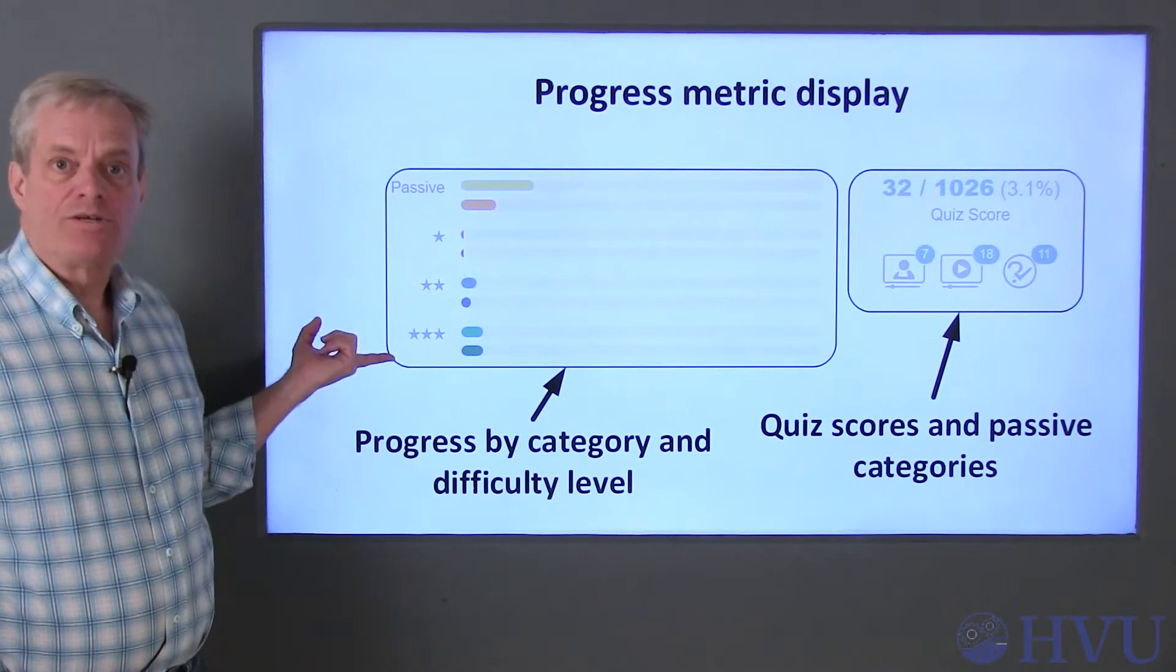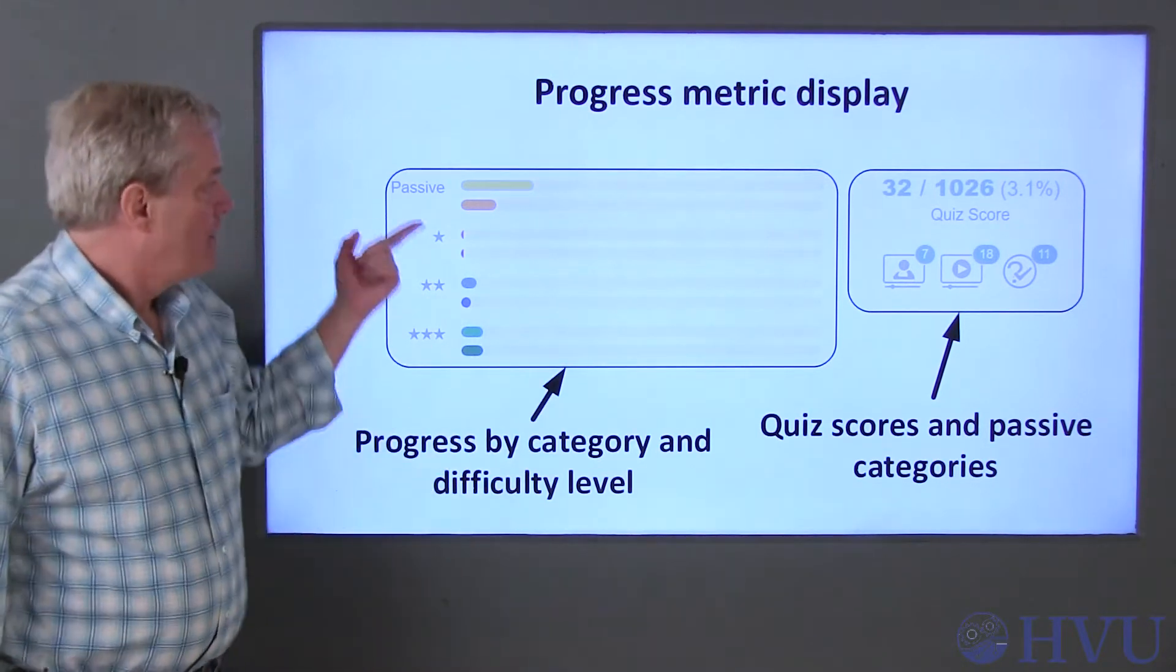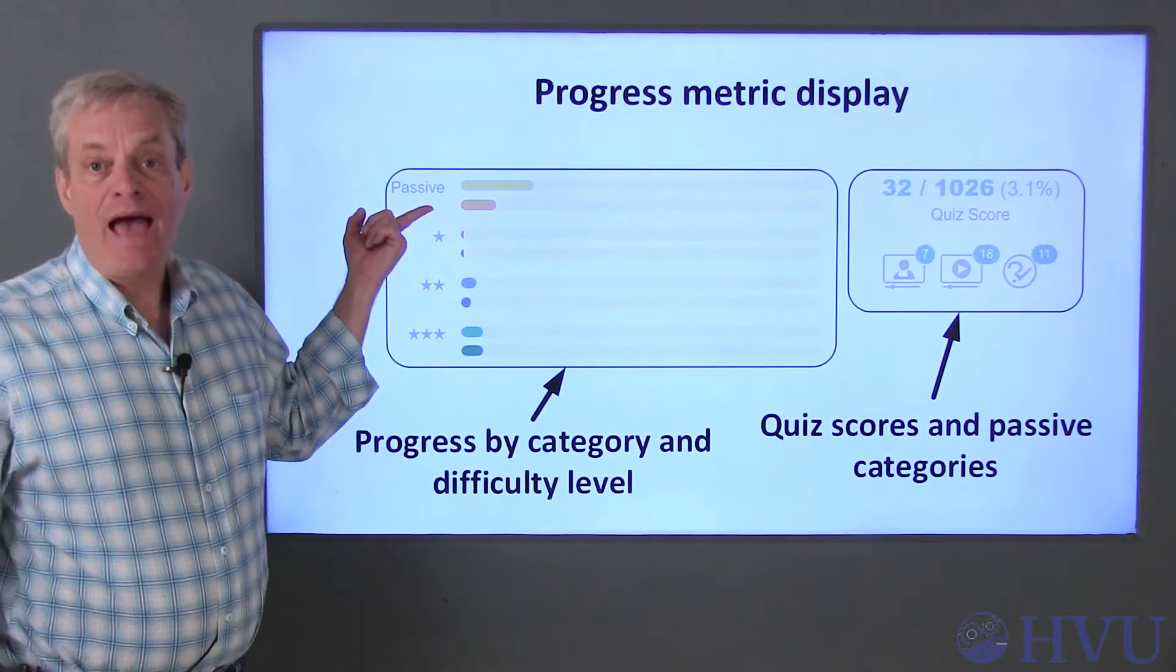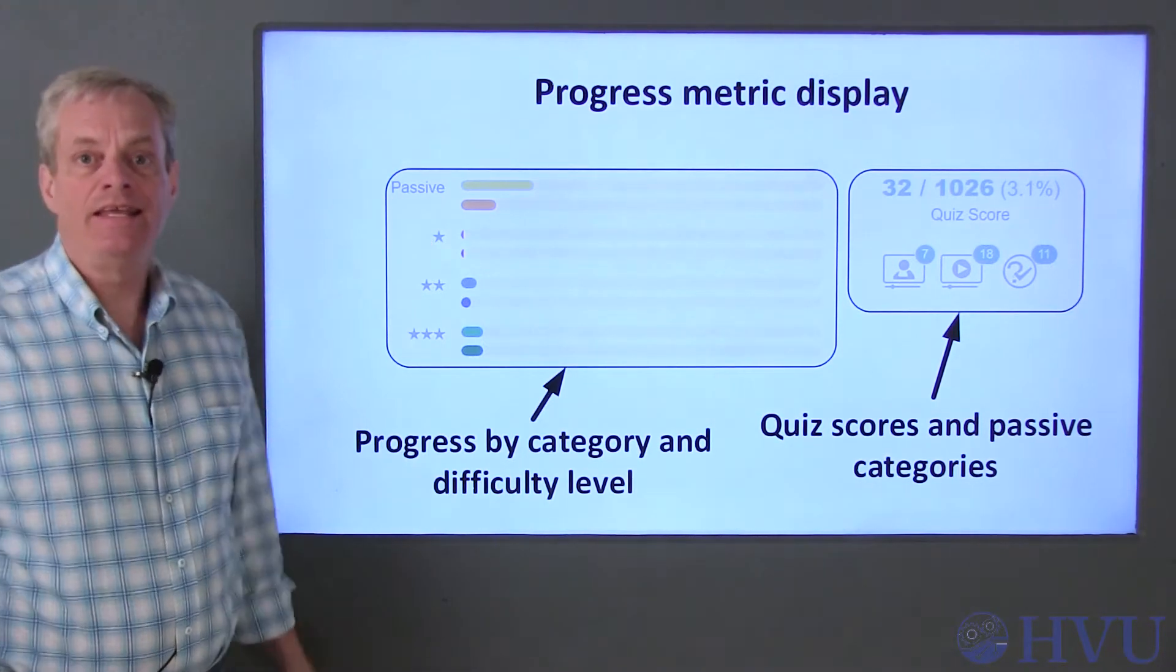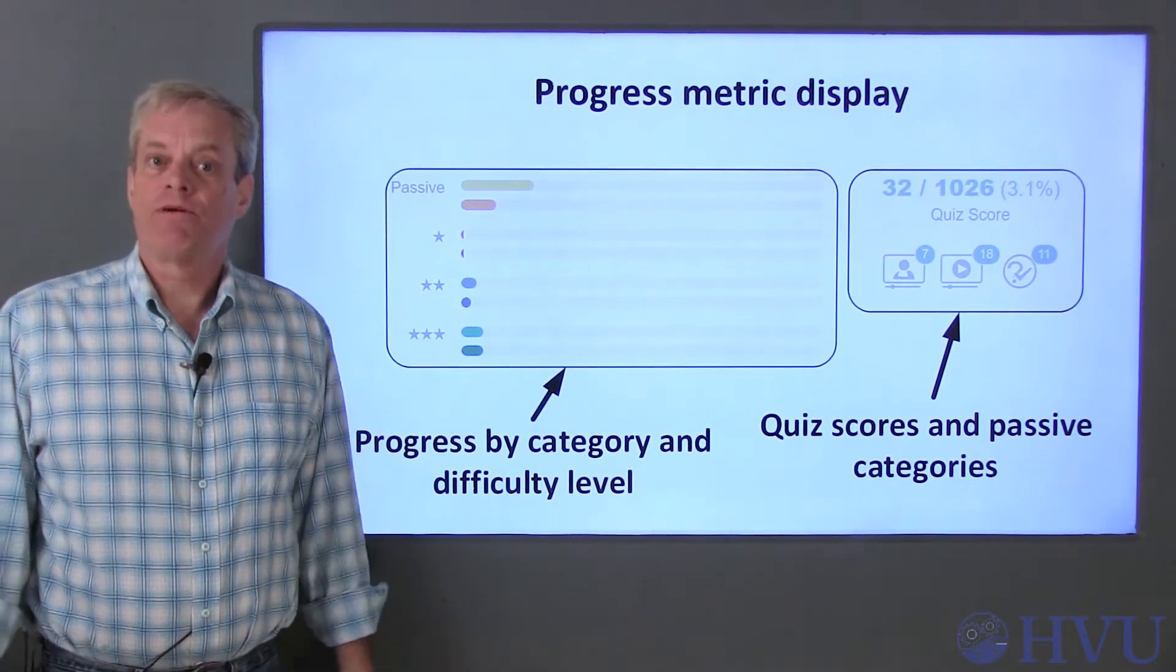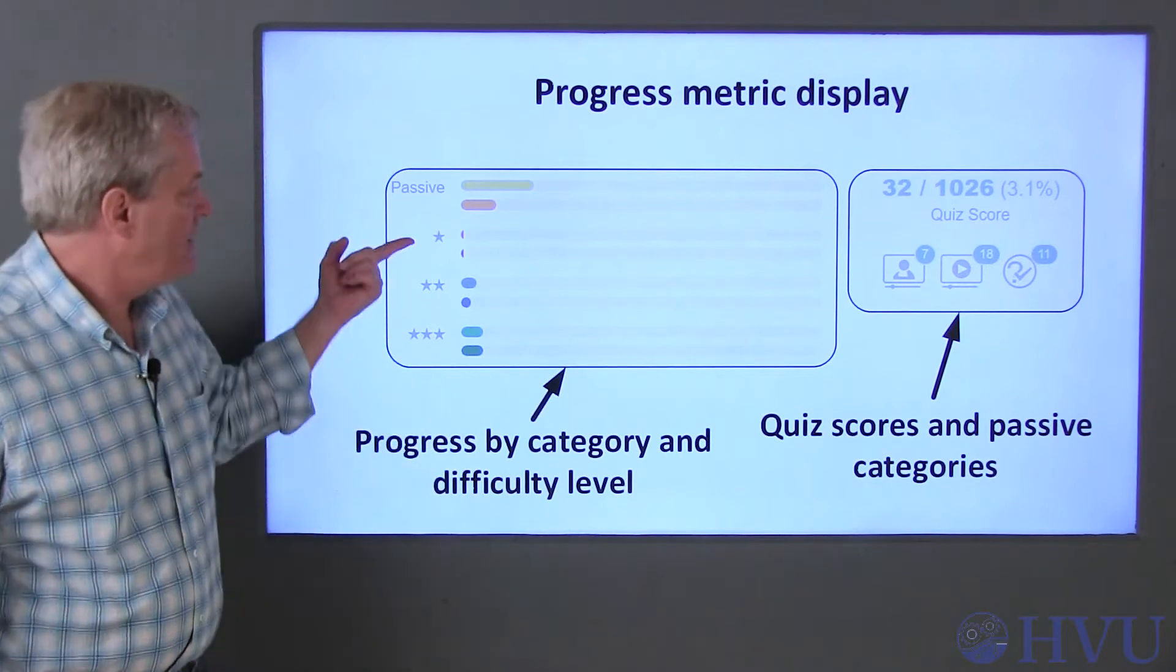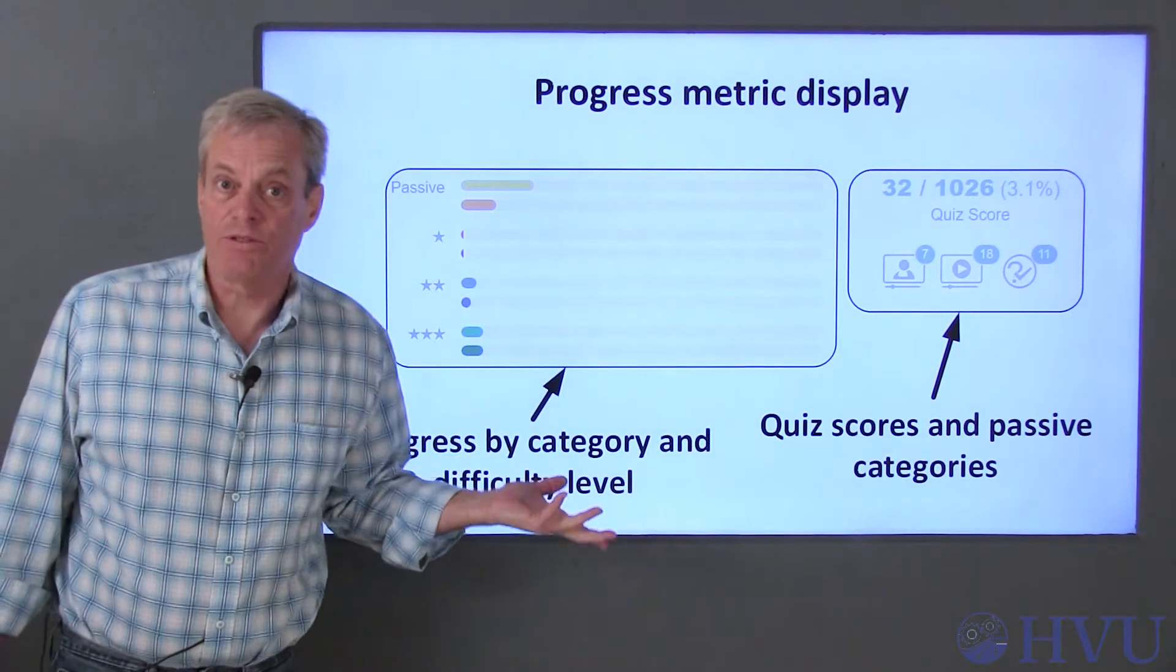These set of stacked bars are intended to show the student's level of engagement with the course materials. The top two bars indicate the passive activities. The bottom three sets of bars indicate engagement with the active materials, the practice problems. The practice problem difficulty levels are indicated by 1, 2, or 3 stars, with 3 star problems being the most difficult.